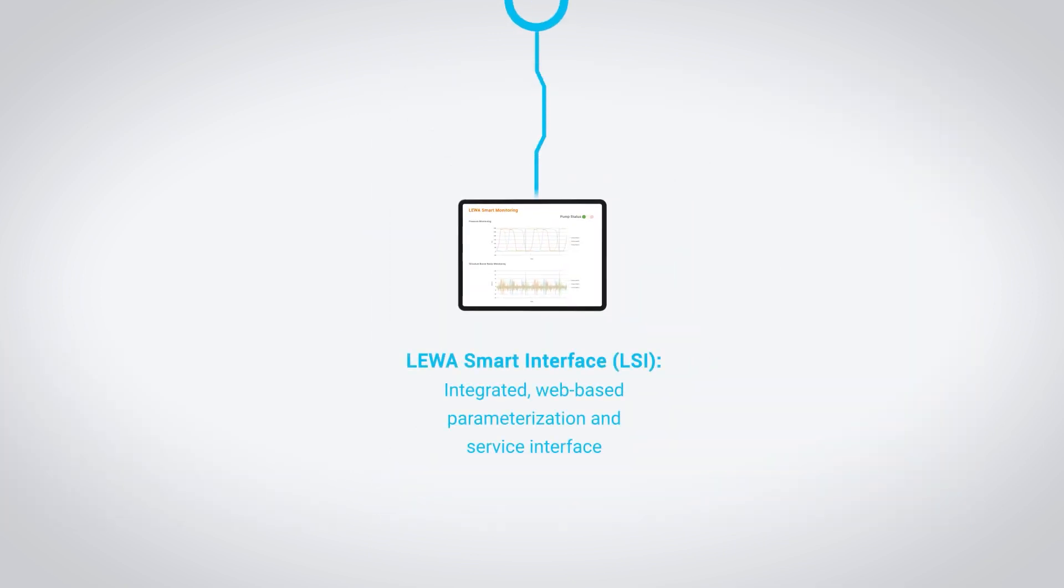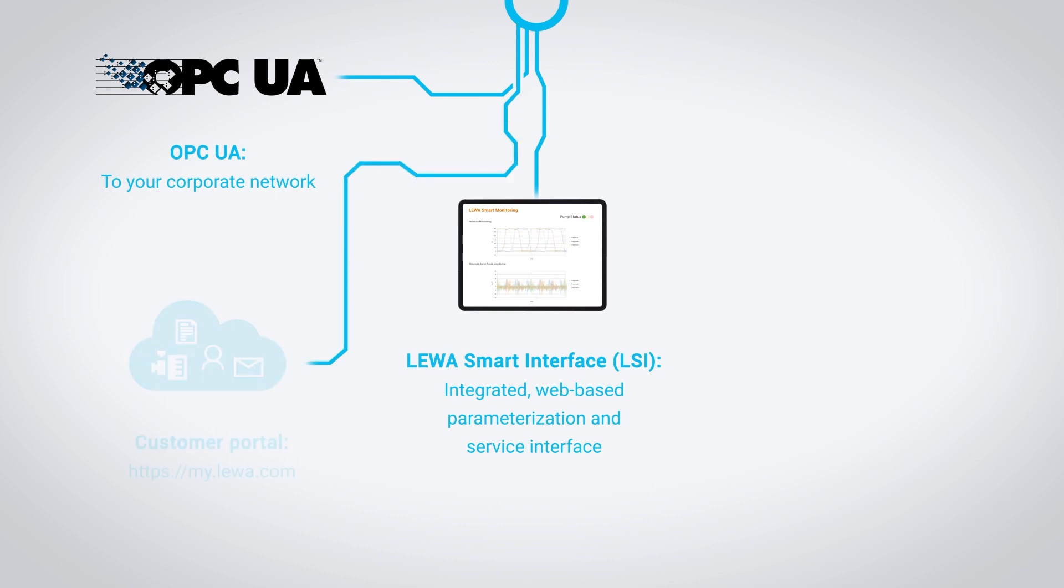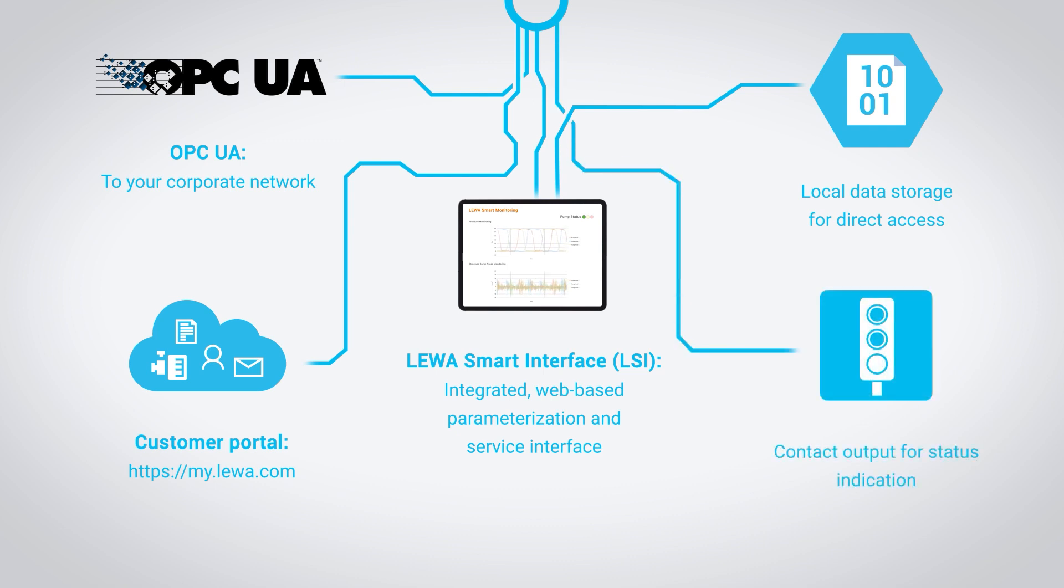The selection of different interfaces allows easy integration into company networks, for example with the industry standard OPC UA. The Liwa Smart Interface also offers a user-friendly web-based interface. All values are visualized and error messages are displayed. Local storage saves your data directly on-site. A traffic light system visualizes the pump status in a simple form.